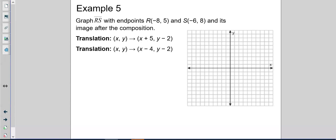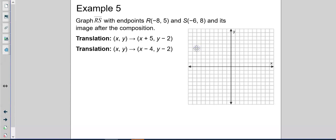So RS is at negative 8, 5. So 1, 2, 3, 4, 5, 6, 7, 8 to the left. And up 5. 1, 2, 3, 4, 5. Well, that did me no good because I moved the graph. So 8, 1, 2, 3, 4, 5. Let's try this again. Yay. There's R. And then negative 6, 8. 1, 2, 3, 4, 5, 6. Here's 5, 6, 7, 8. So there's my R. And here's my S.